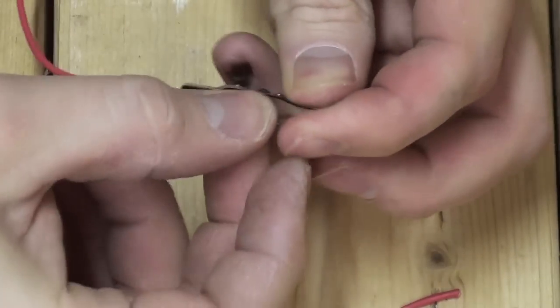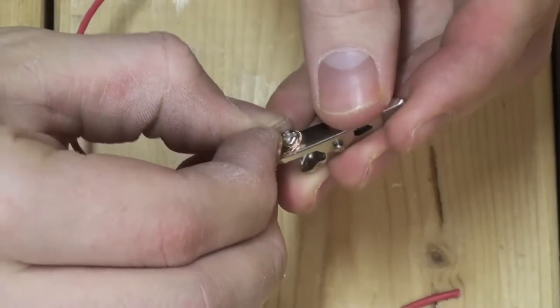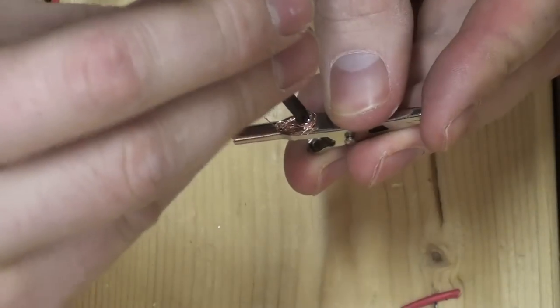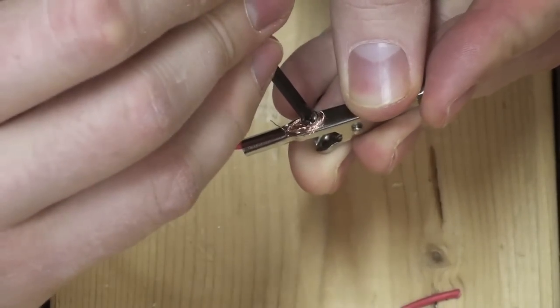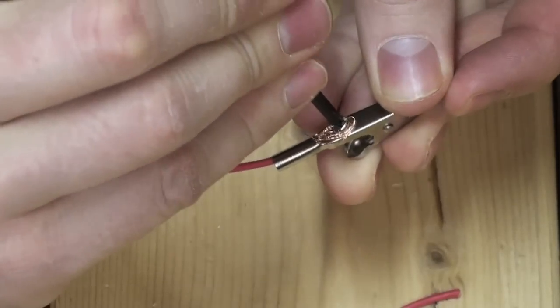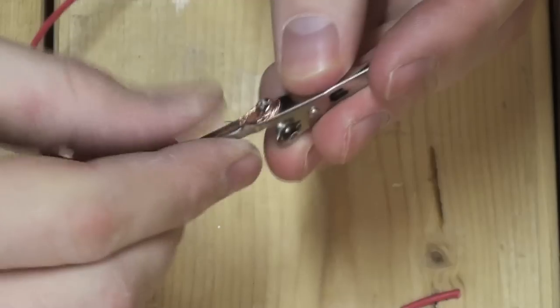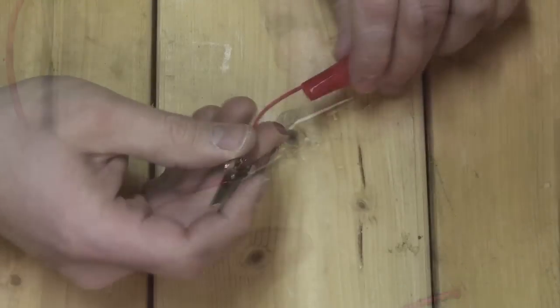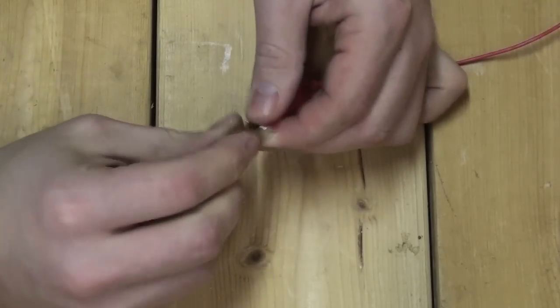You will always want to wrap the wire around the screw terminal in a clockwise fashion. This will allow a good solid connection that does not fray the wire when you advance the screw. With the lead wire firmly attached, simply replace the rubber insulator back onto the alligator clip.